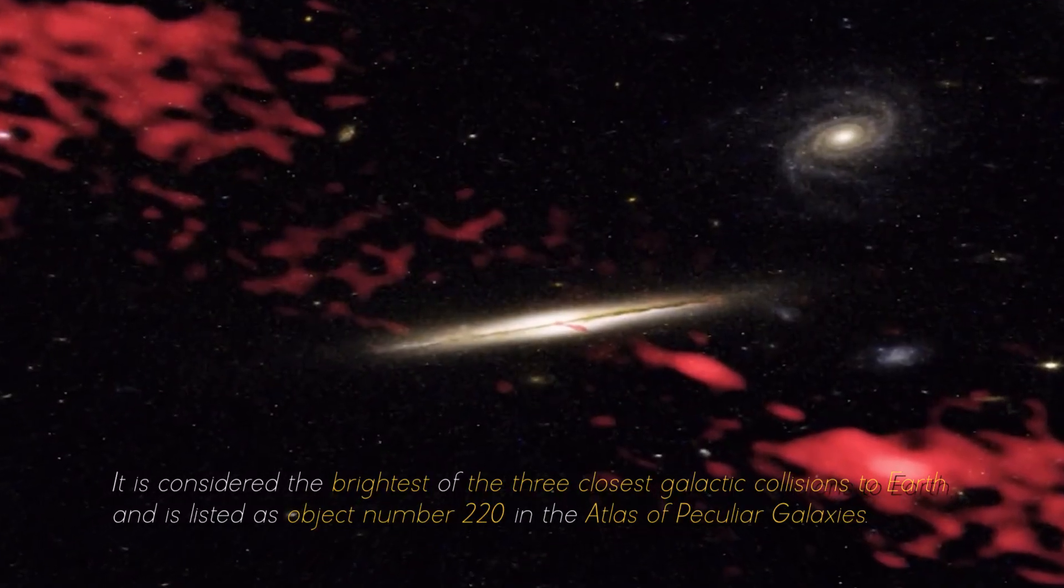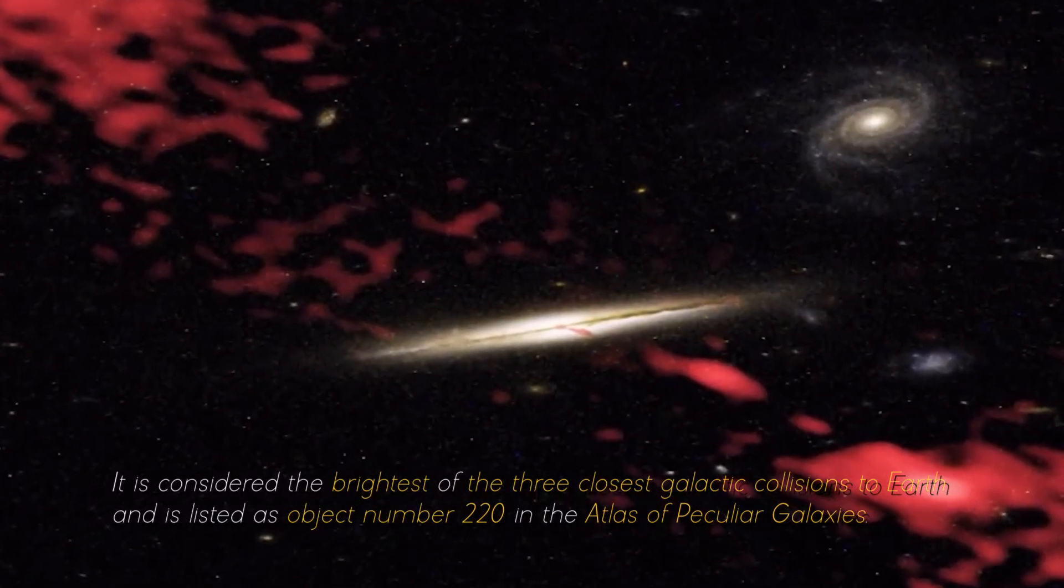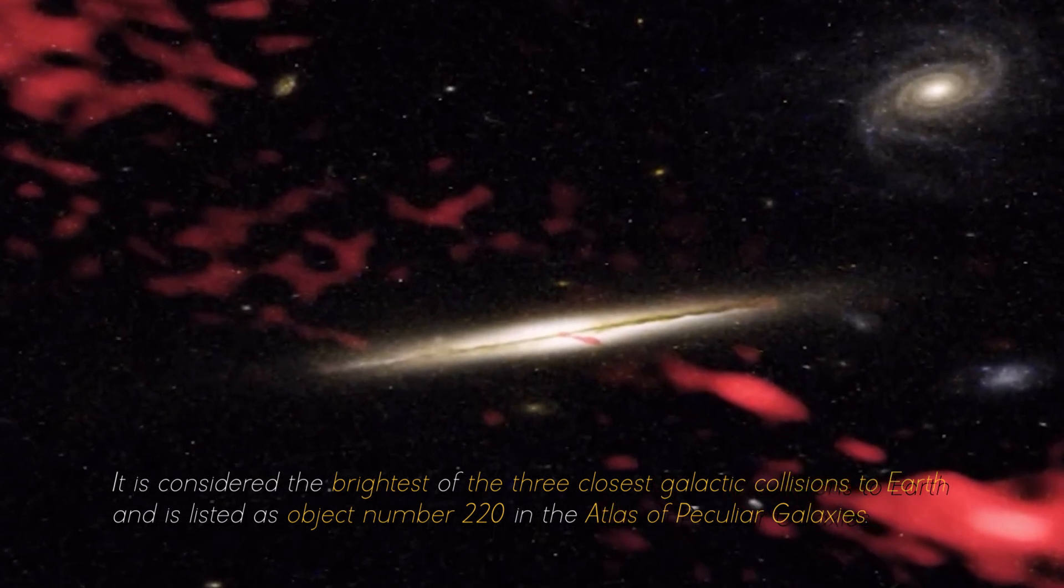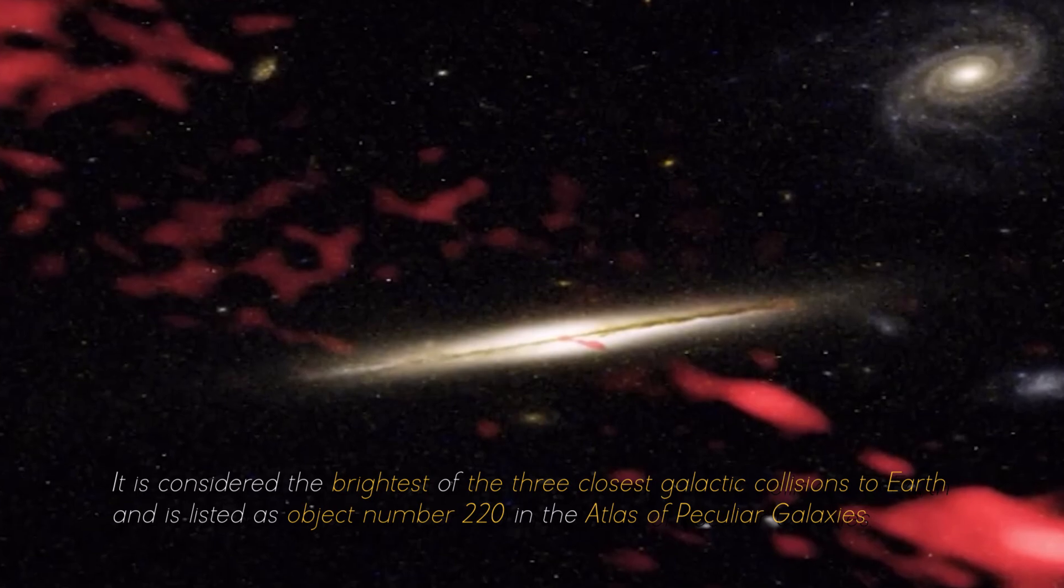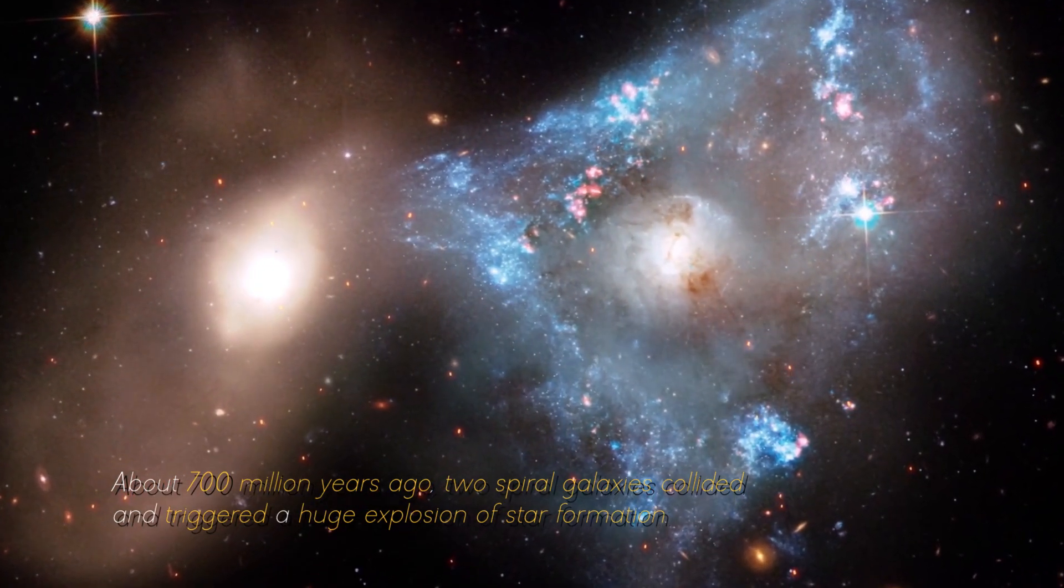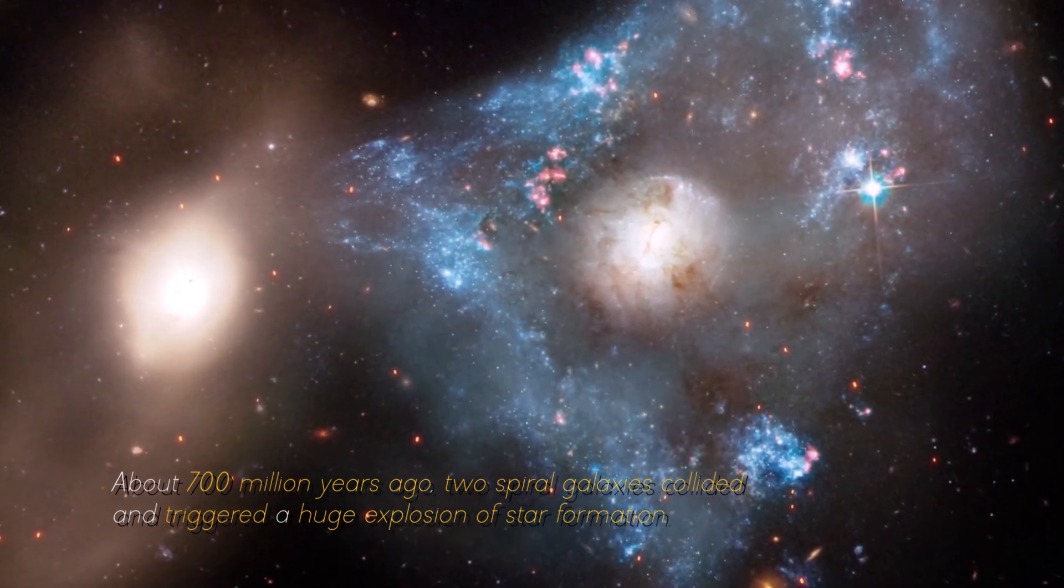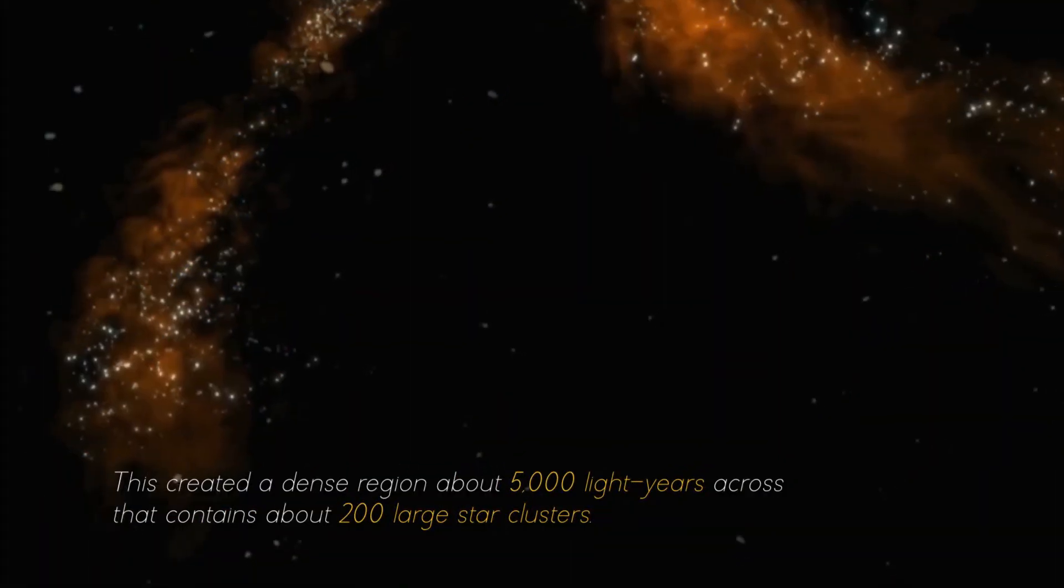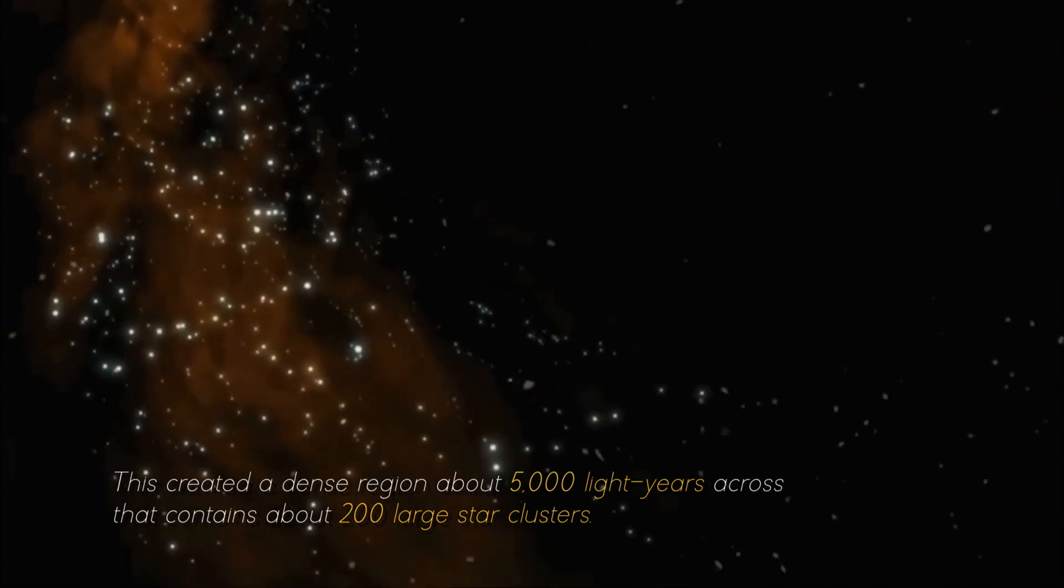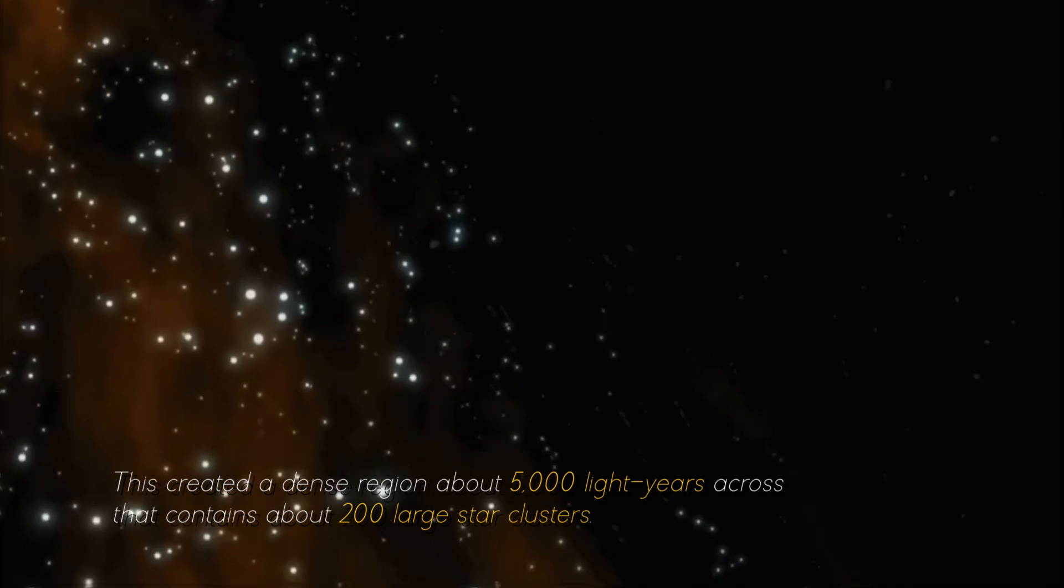It is considered the brightest of the three closest galactic collisions to Earth and is listed as object number 220 in the Atlas of Peculiar Galaxies. About 700 million years ago, two spiral galaxies collided and triggered a huge explosion of star formation. This created a dense region about 5,000 light-years across that contains about 200 large star clusters.